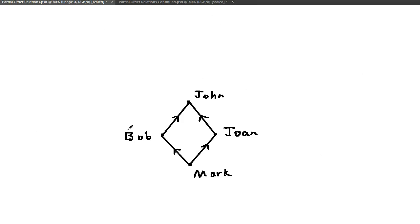Suppose the following diagram represents the ordering of the people in A according to height. So Mark is shorter than Bob and Joanne. Bob and Joanne are shorter than John, but Bob and Joanne have the same height.